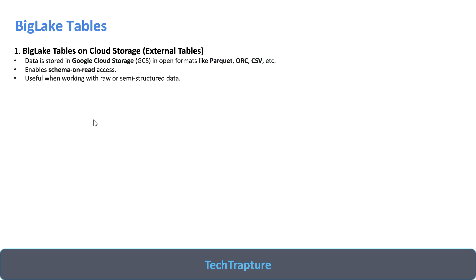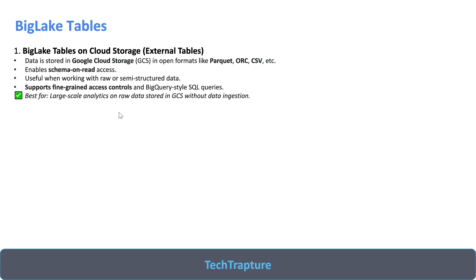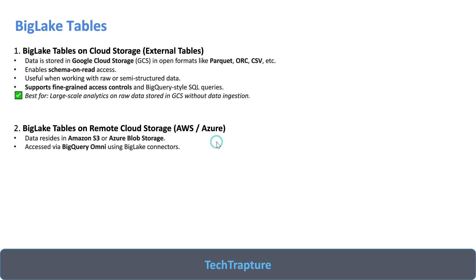The second type supports data on other clouds like AWS or Azure using the BigQuery Omni feature. We will see BigQuery Omni in detail in the next video — how we can use it to query data from AWS S3 bucket and create a table in BigQuery to access that data.